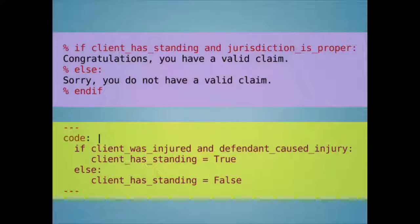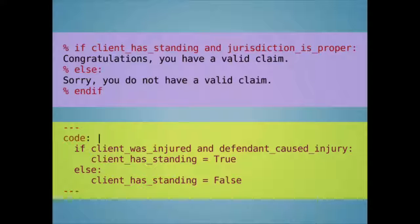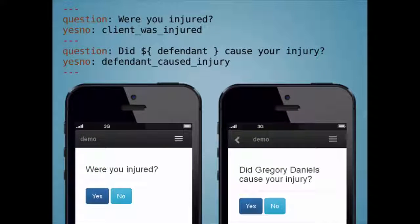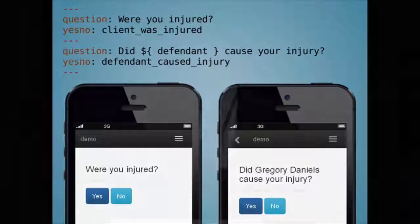For example, you can write things like this in a template: if the client has standing and if the jurisdiction is proper, tell the client he has a valid claim. The variable 'client has standing' is a legal concept that can be expressed using simple Python code. It depends on two variables: 'client was injured' and 'defendant caused injury.' So if necessary, DocAssemble will ask the user if he was injured and if the defendant caused the injury. All the author needs to do is declare what it means for the client to have standing and what it means for jurisdiction to be proper using this simple Python code, and then declare how to ask questions to gather information from the user. The computer will figure out all the flow charting and process automatically.